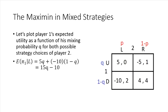So first thing note that the expected payoff for player one if he plays left is going to be 15Q minus 10 because he gets 5 with probability Q and negative 10 with probability 1 minus Q when player two is playing left.